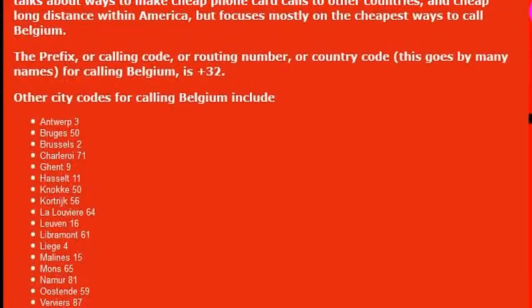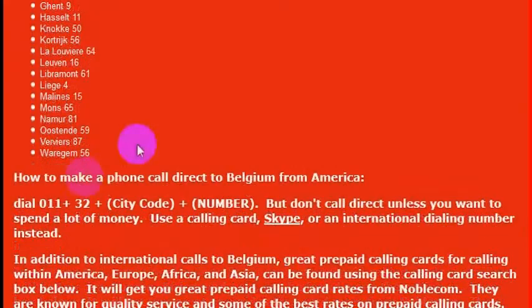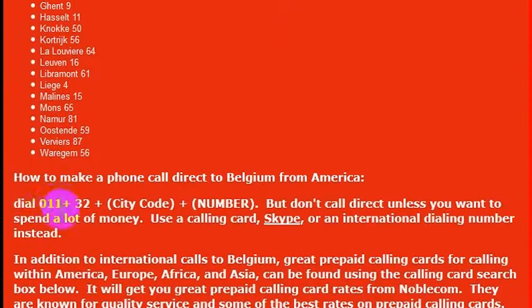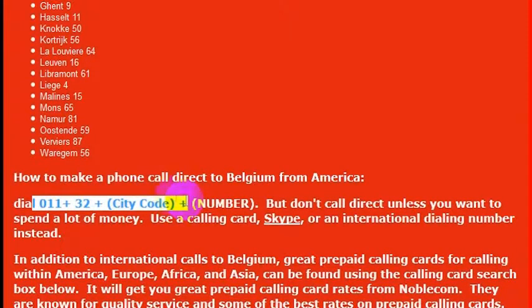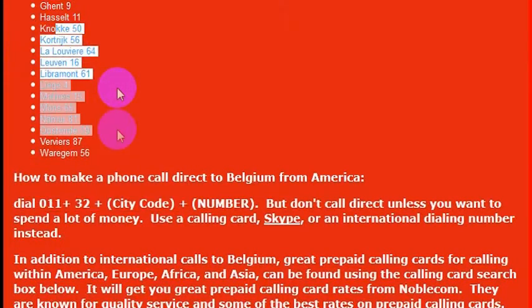In any case, I may need to be able to call Belgium and arrange some things in advance. If I need to do that, it's very simple to make phone calls to Belgium from the United States from any phone that is internationally enabled. You would simply pick up the phone and dial 011 plus 32, which is the country code for Belgium, plus the city code, and then the number.